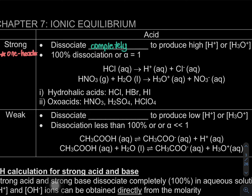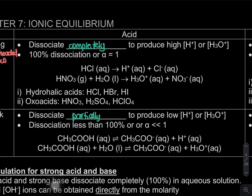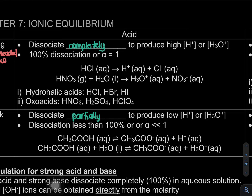A weak acid dissociates only partially to produce a low concentration of H⁺ or H₃O⁺. The dissociation is less than 100%, so the degree of dissociation alpha is less than 1. For example, a carboxylic acid dissociates to form H⁺, same products as strong acid, but the difference is in the arrow used.